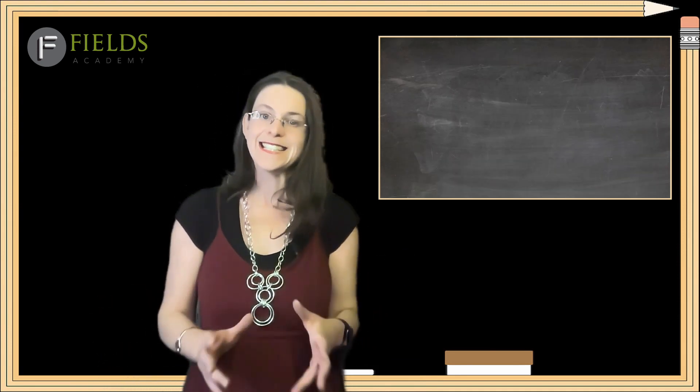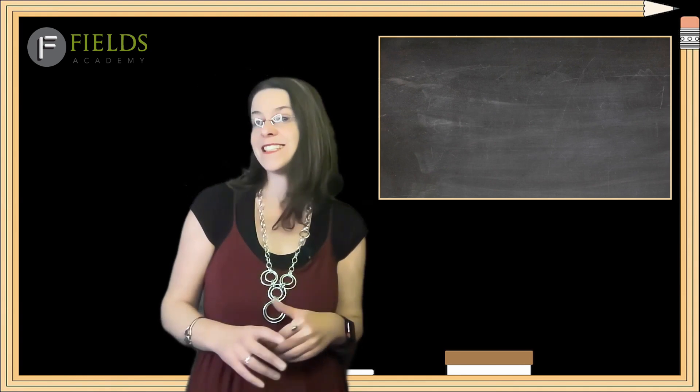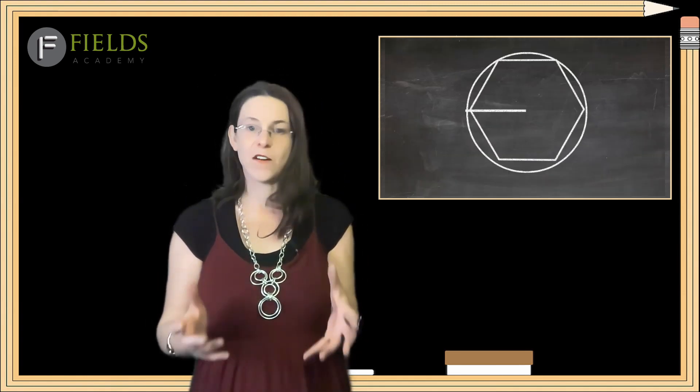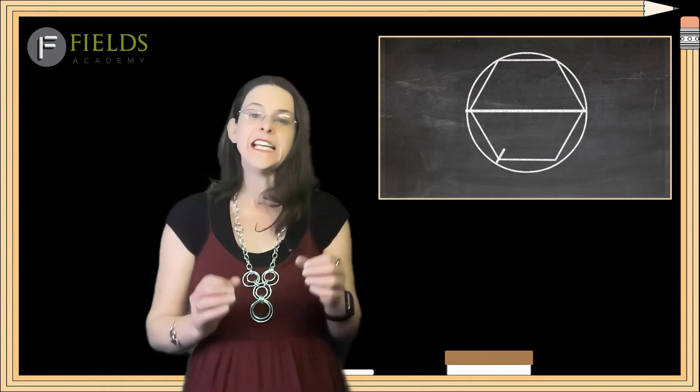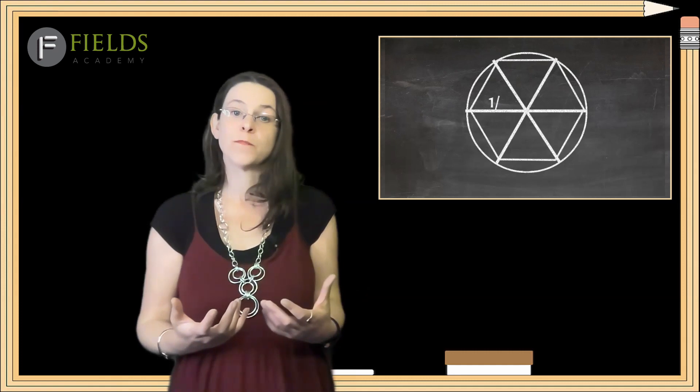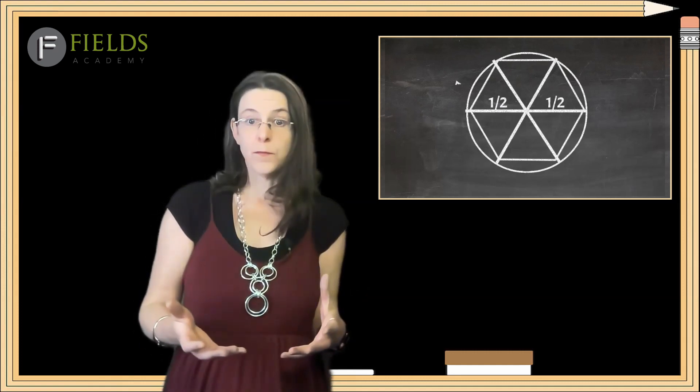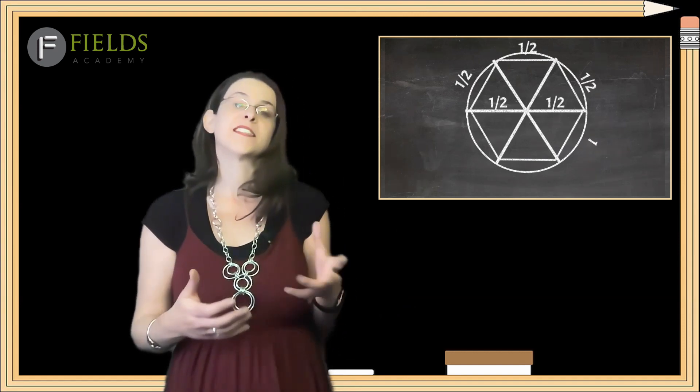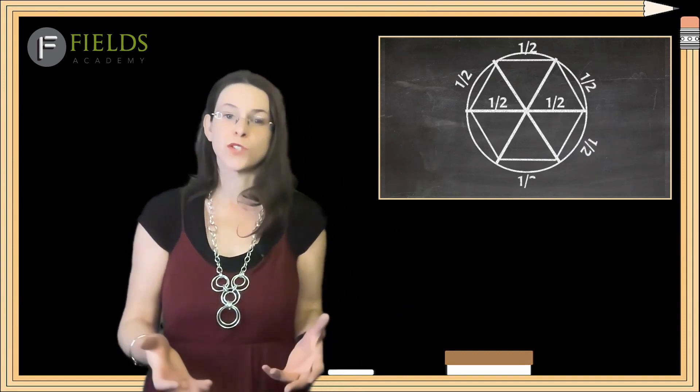Now, since the hexagon is made up of six equilateral triangles, and since the radius of a circle is half of its diameter, then each piece of the hexagon's outside length is one-half. And since there are six of them put together to make the full hexagon, we have six times one-half, which equals three. It's not quite pi, but it's close-ish.